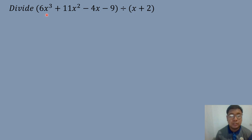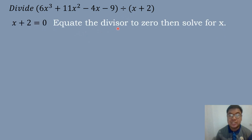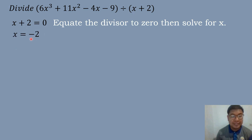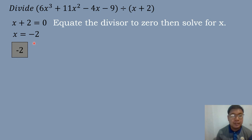Let's have our first example. Divide 6X to the third power plus 11X squared minus 4X minus 9 divided by X plus 2. The first step is to equate the divisor to 0 then solve for X. So we have X plus 2 equals 0, and we transpose positive 2, it becomes negative 2. So X equals negative 2, and we will write negative 2 here, then get the numerical coefficient of each term of our dividend.